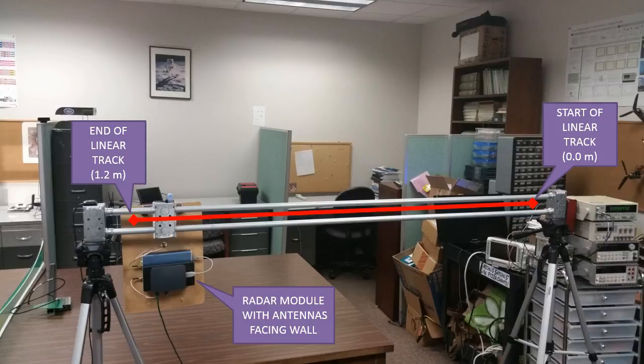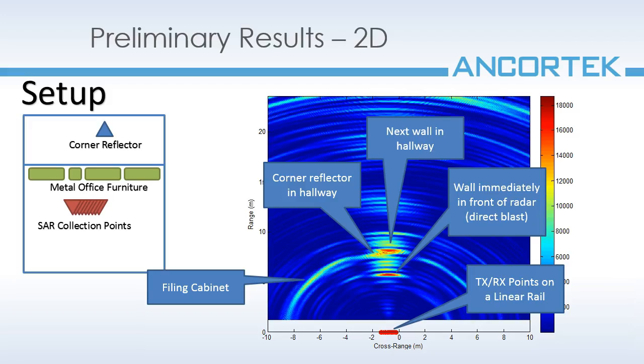For my last trial, I've placed the radar in the center of an occupied lab and had it face the same hallway from before. Instead of a pipe, I've placed a corner reflector in the center of the hallway 1 meter to the left of the radar's midline. There are various pieces of metal office furniture below the elevation of the radar. The initial 2D results clearly show the immediate wall and the wall on the opposite side of the hallway. The corner reflector can just barely be seen, but its presence is detectable.